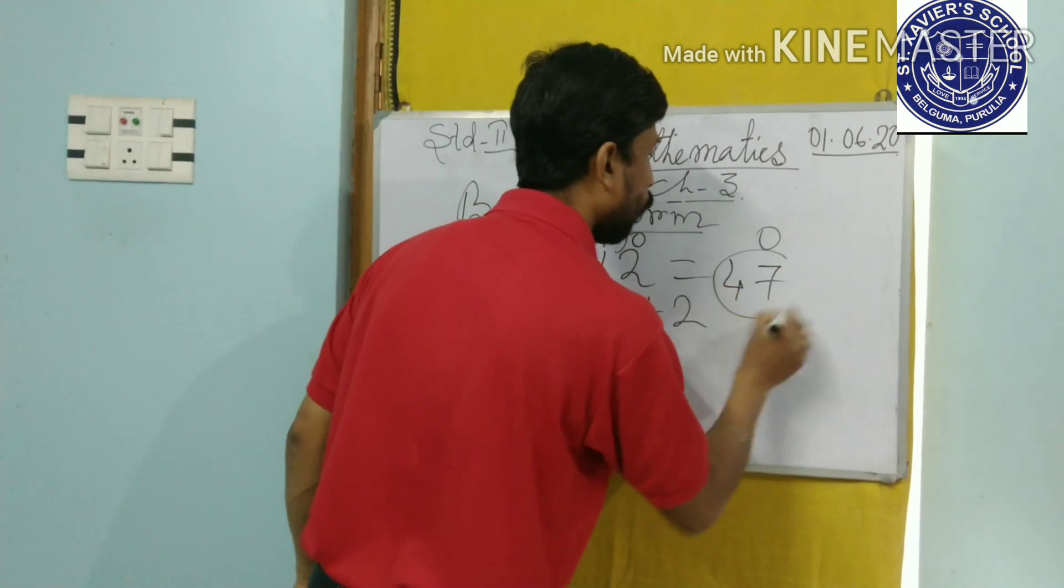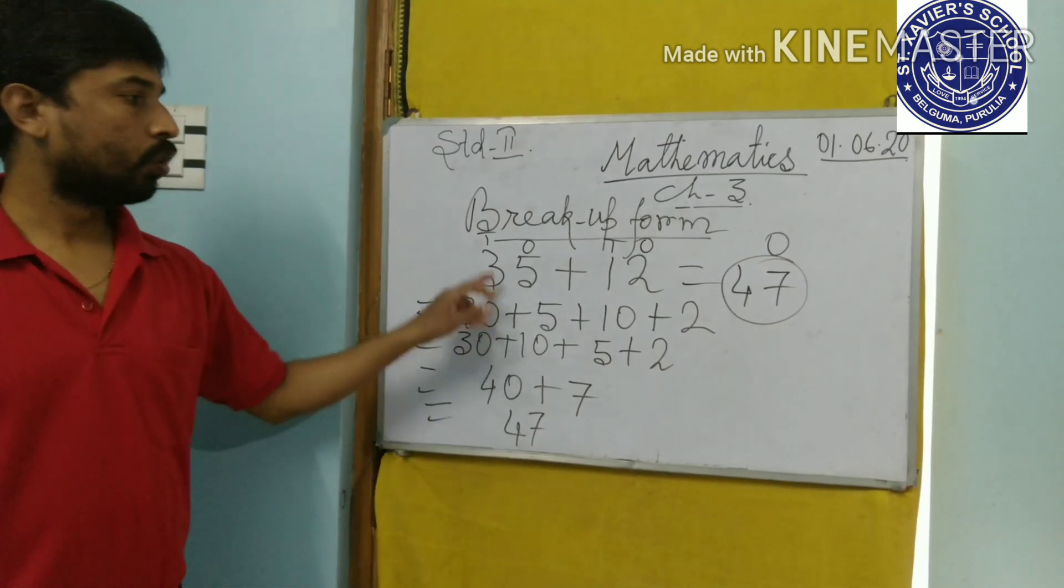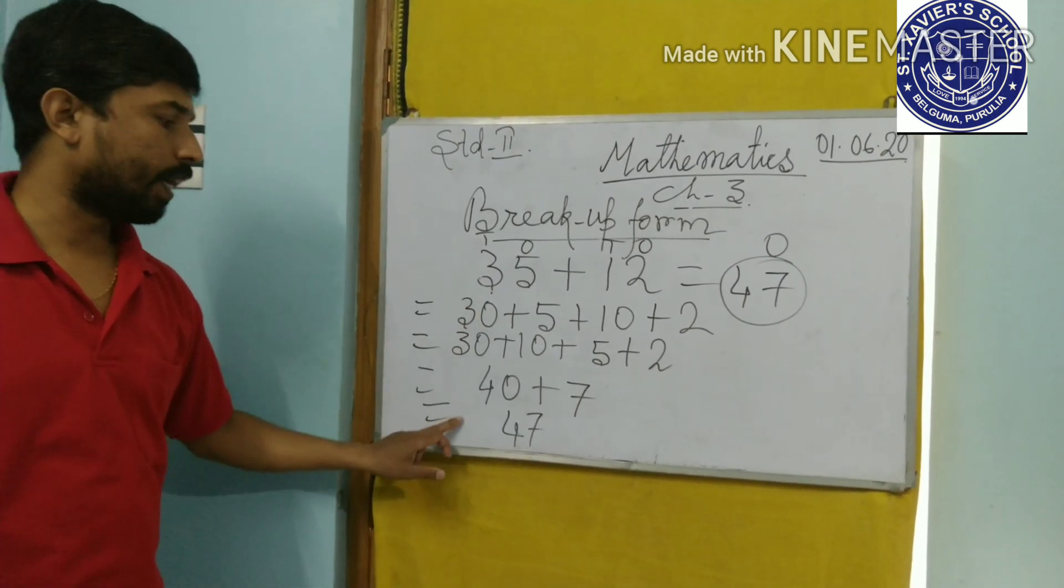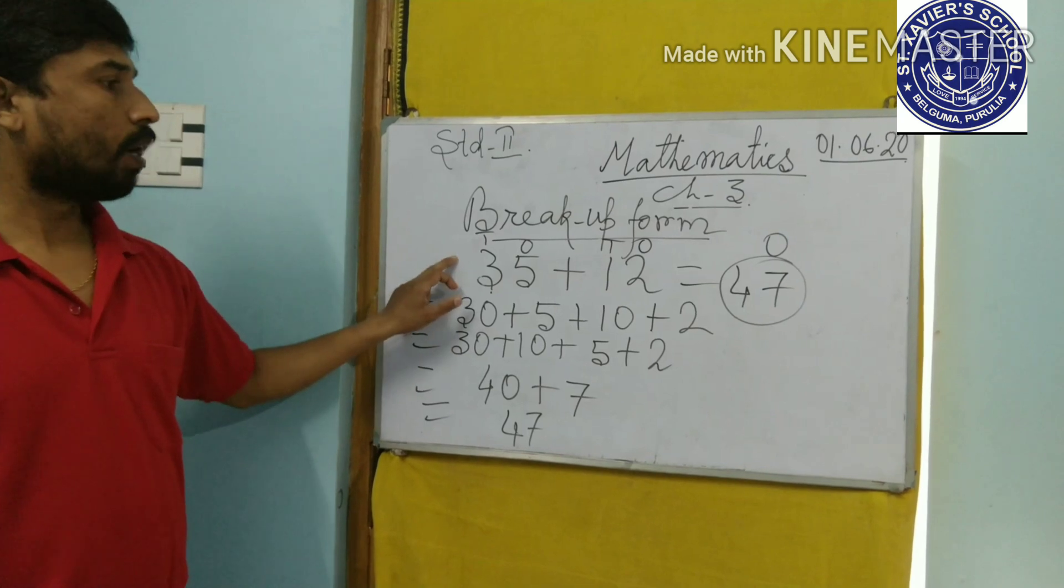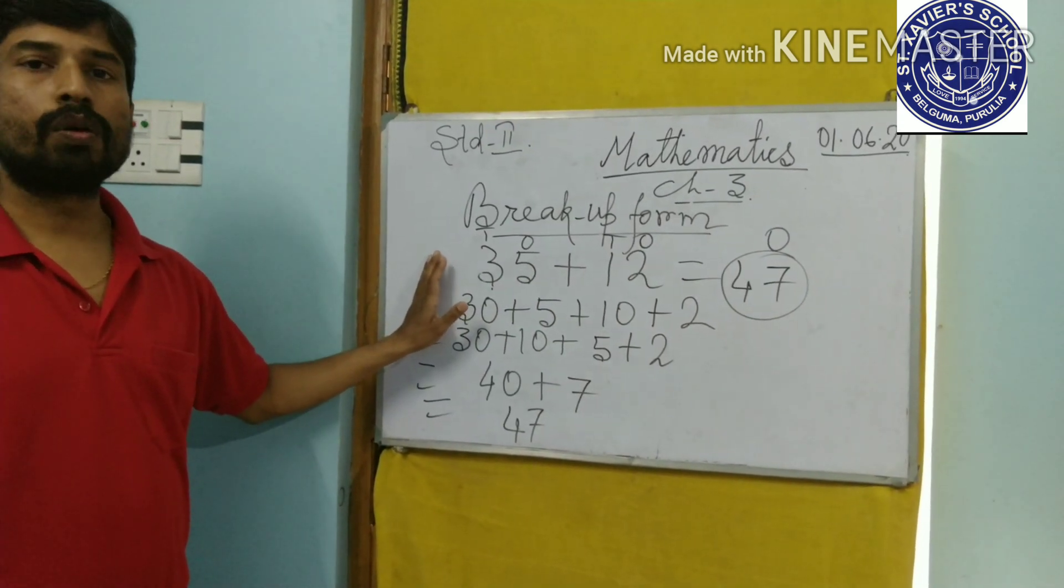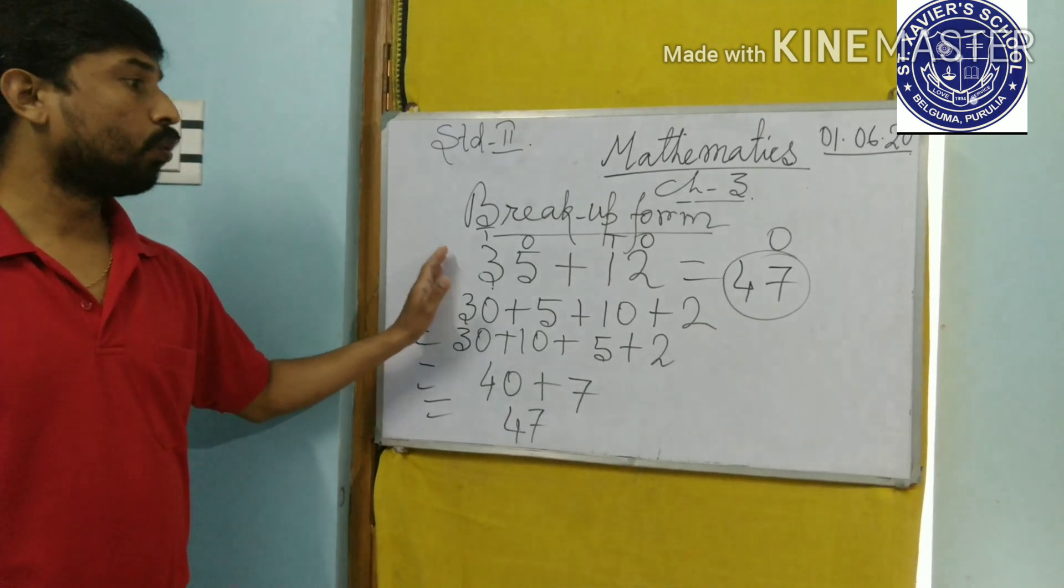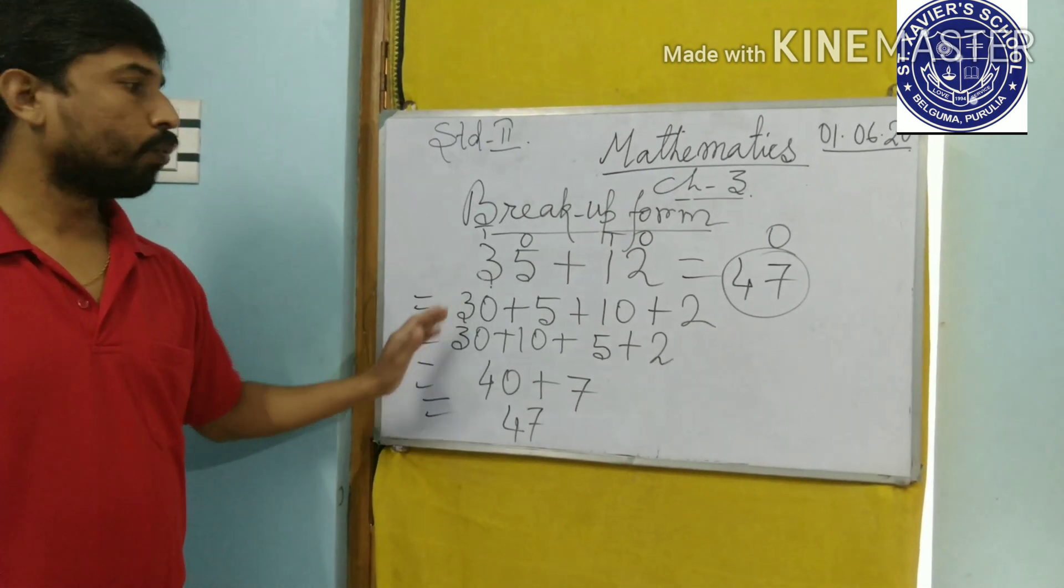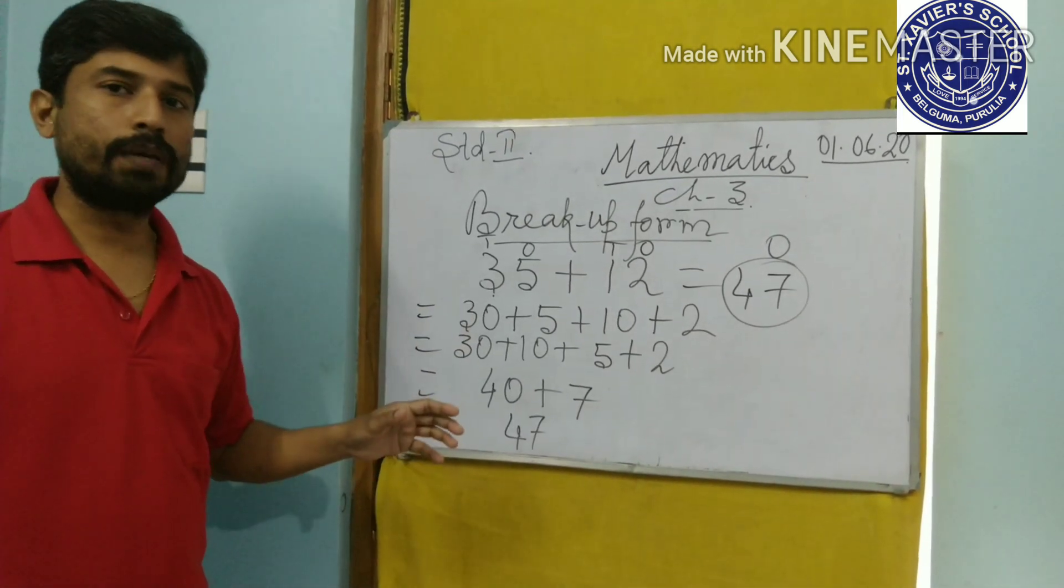So by this way, we can add in our mind also. We can break it and add. And through our mind, we can add. So I think everybody has understood how to add through breakup form. Now, we will learn how to arrange in columns and add.